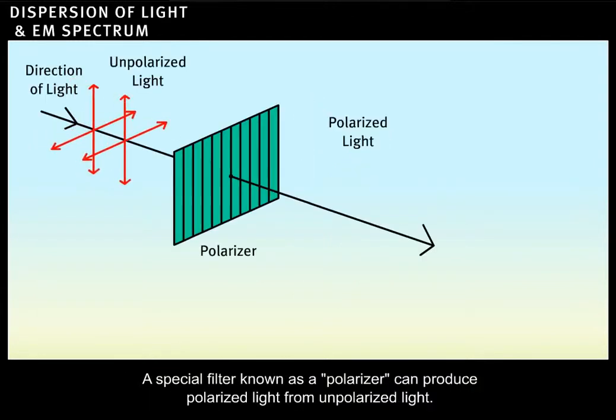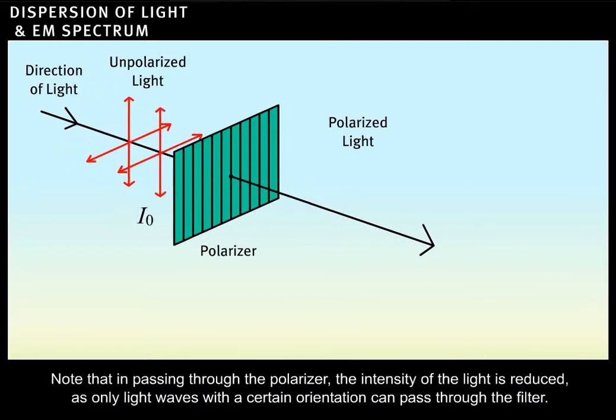A special filter known as a polarizer can produce polarized light from unpolarized light. Note that in passing through the polarizer, the intensity of the light is reduced, as only light waves with a certain orientation can pass through the filter.